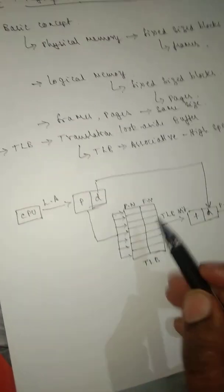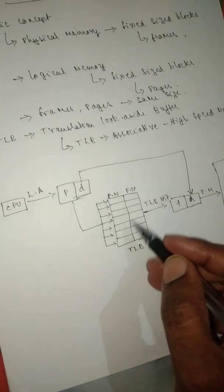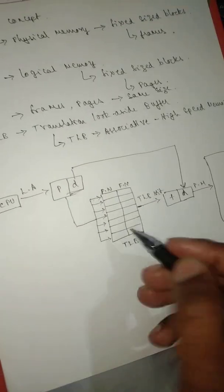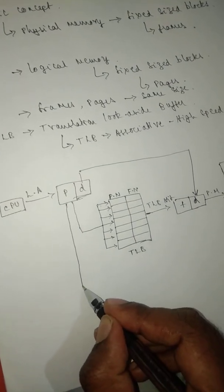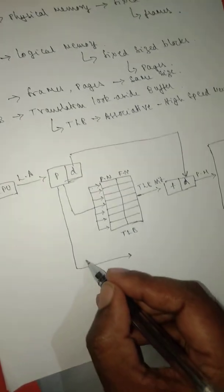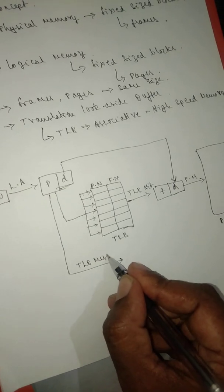Suppose the required frame you're searching for isn't there, then you search in the page table. That process is called a TLB miss.